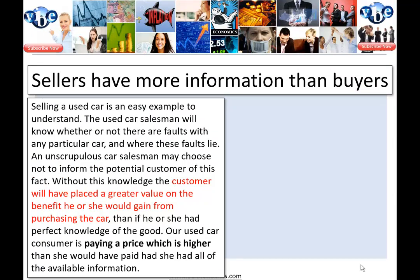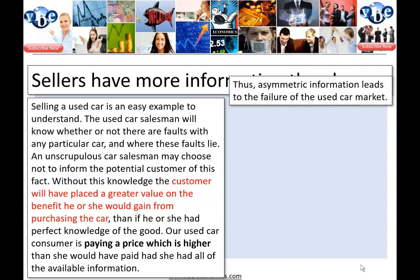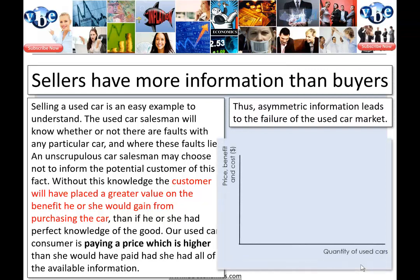Sellers having more information than buyers — the used car is a clear example. An unscrupulous car salesman may choose not to inform the potential customer of known faults. Without this knowledge, the customer places a greater value on the car than they would with perfect information, paying a price higher than they otherwise would. Therefore, asymmetric information leads to failure in the used car market.